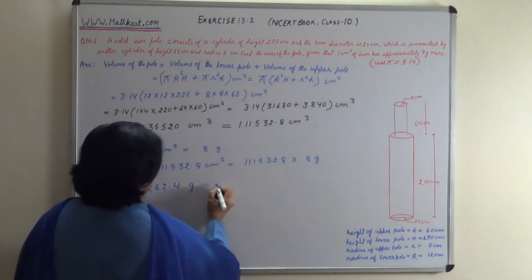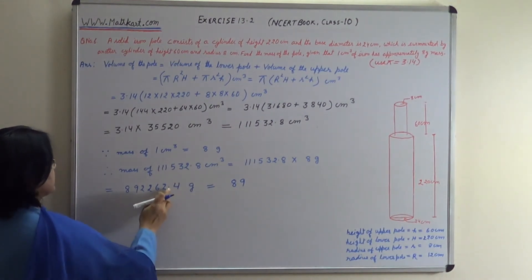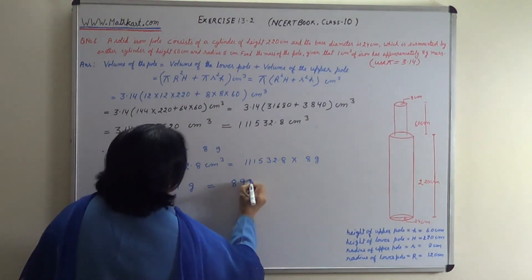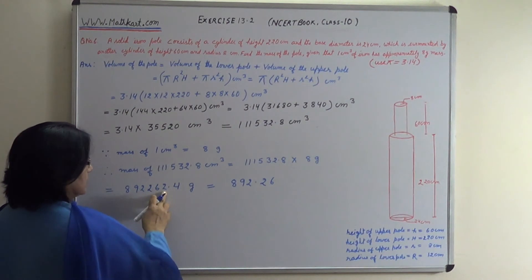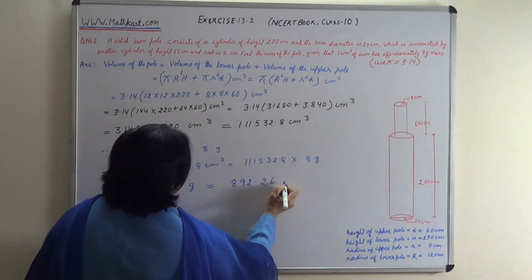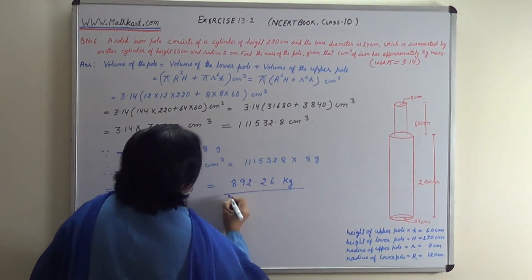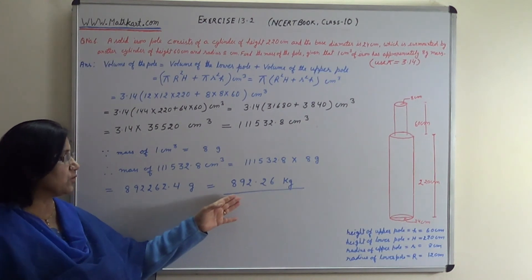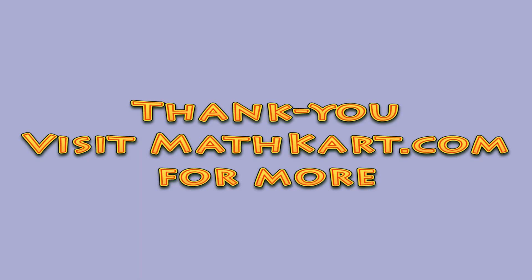This equals 111,532.8 times 8 grams, which equals 892,262.4 grams. Converting to kilograms, this is equal to 892.26 kg.